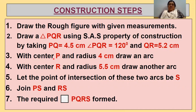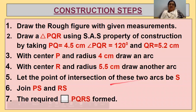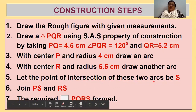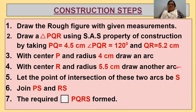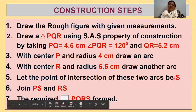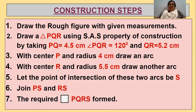The third step is: with center P and radius 4.5 cm, draw an arc. The fourth step is: with center R and radius 5.5 cm, draw another arc. Let the point of intersection of these two arcs be S. Then join PS and RS so that the required quadrilateral PQRS is formed.